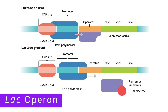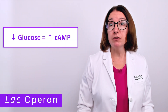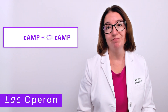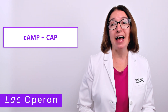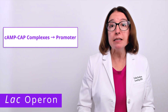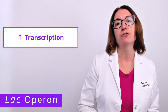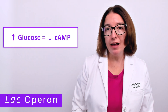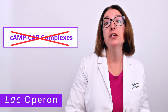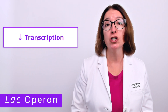You'll notice that in both scenarios, cAMP-CAP complexes are bound at the promoter site of the operon. Transcription of the genes in the lac operon only occurs when glucose levels are low. When glucose levels are low, this causes an increase in cAMP, which stands for cyclic adenosine monophosphate. cAMP binds with CAP, which stands for catabolite activator protein. These cAMP-CAP complexes then bind to the promoter site on the lac operon, which stimulates RNA polymerase activity and increases the rate of transcription. Conversely, if glucose levels are high, we will have decreased cAMP, meaning those cAMP-CAP complexes will not form or bind to the promoter site, and transcription will occur at a low rate.